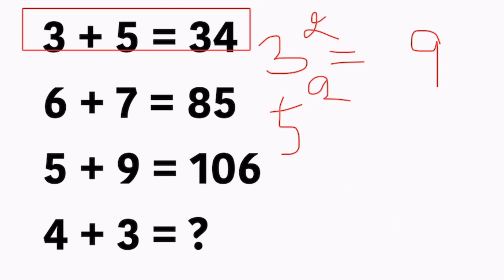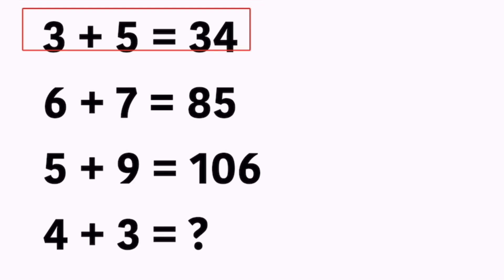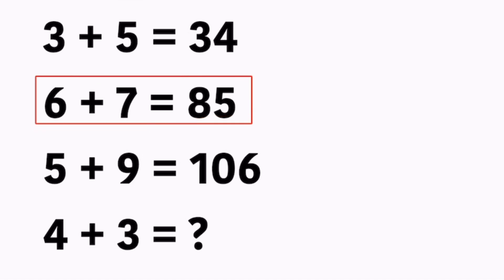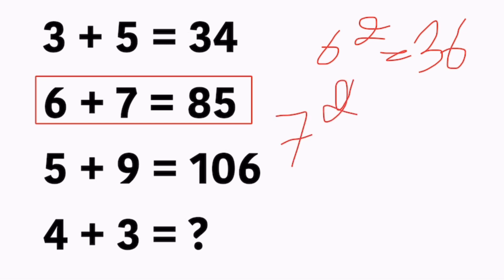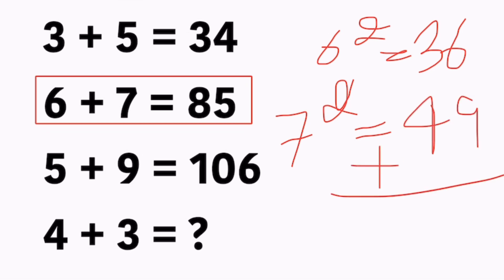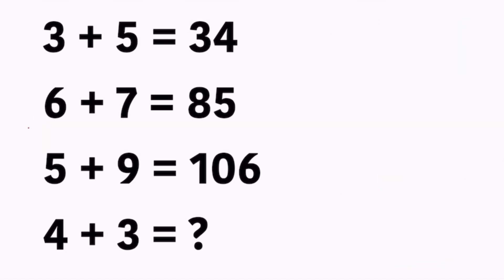Look at the next statement: 6 plus 7 equals 85. Take the first number, 6, and square it: 6 squared equals 36. Take the second number, 7, and square it: 7 squared equals 49. Last step: add both numbers — 36 plus 49 equals 85. And 85 appears on your screen. Now apply the same formula to the next statement.